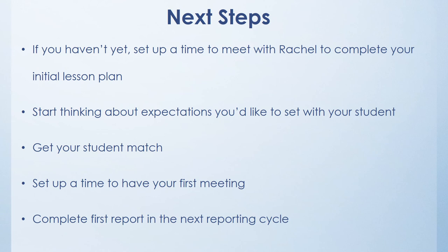In terms of next steps: if you haven't set up a time to meet with Rachel and do your initial lesson planning, then do so. Start thinking about expectations you'd like to set with your student. Get your student match if you haven't already, and set up a time to have your first meeting with them. If you need help with that, get in touch with Rachel and complete your first report on the next reporting cycle.